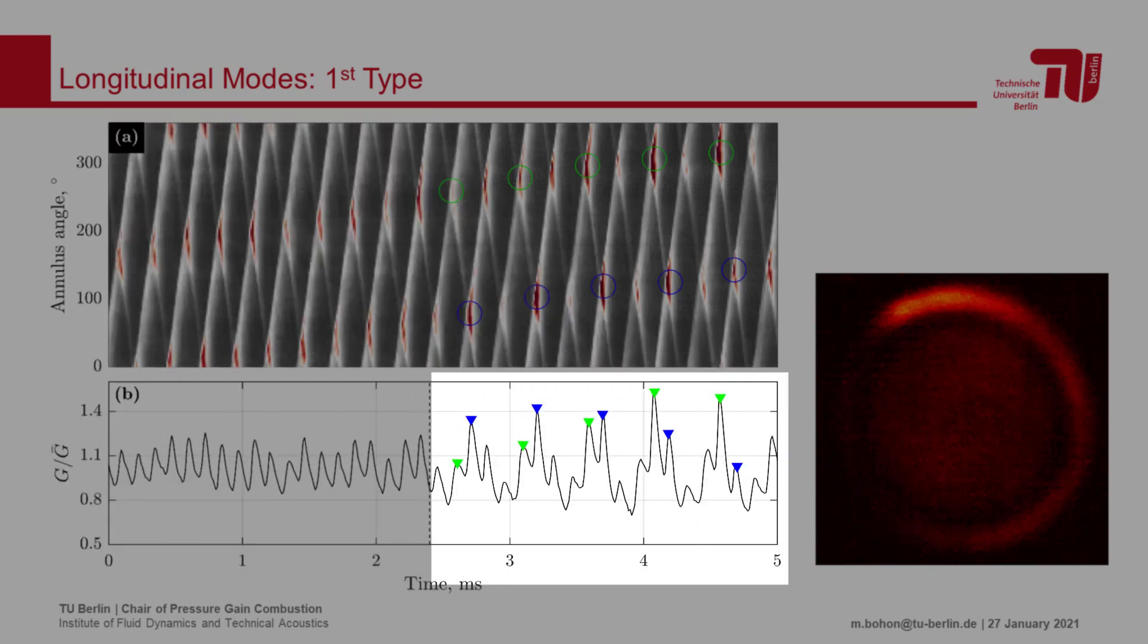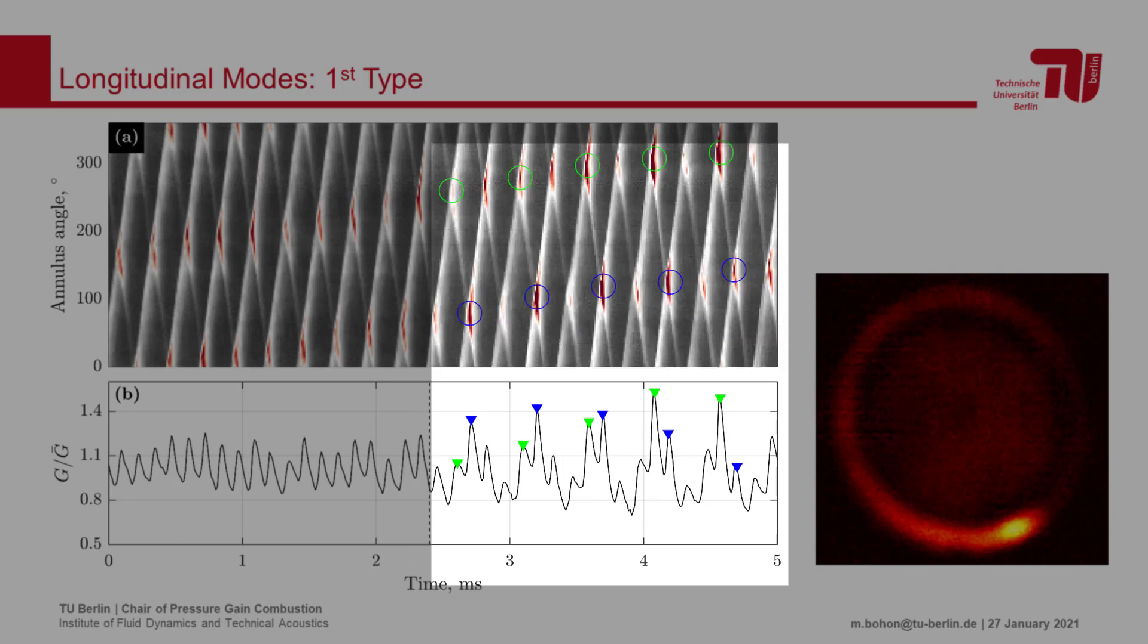However, we then later see a periodic variation in the intensity of these intersections at a lower frequency superimposed over the fluctuations.